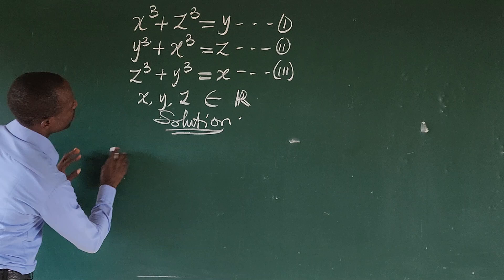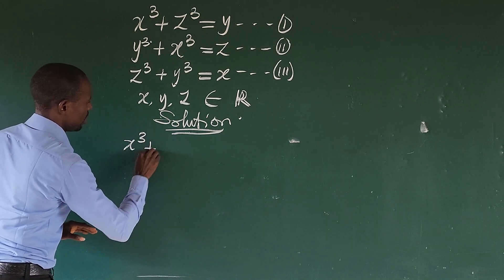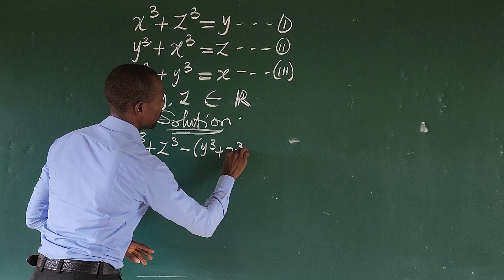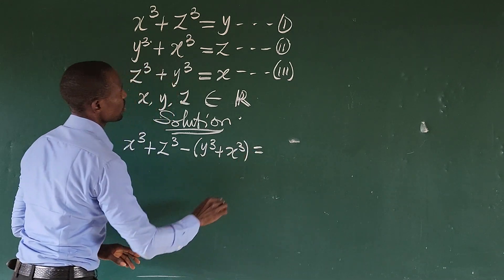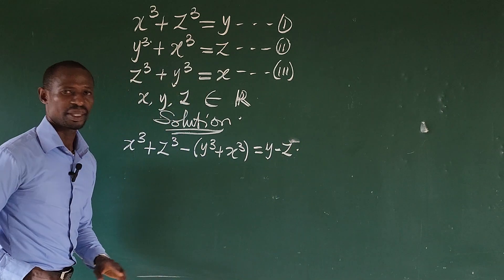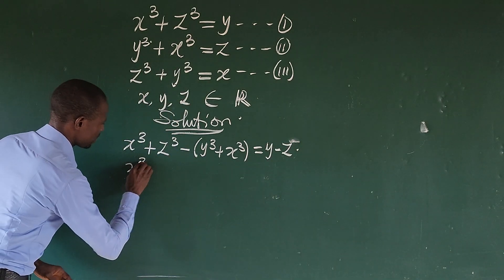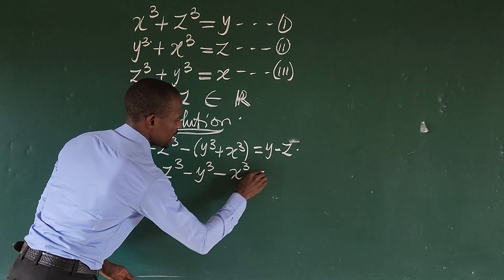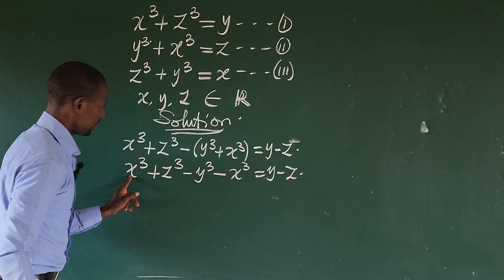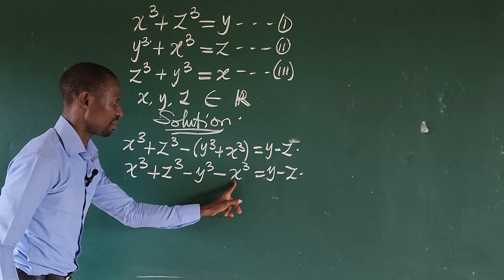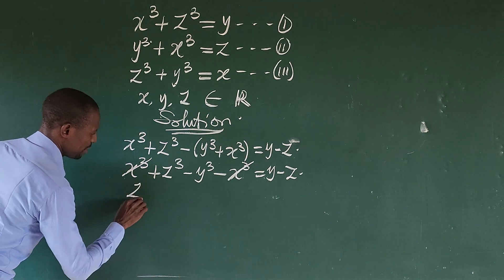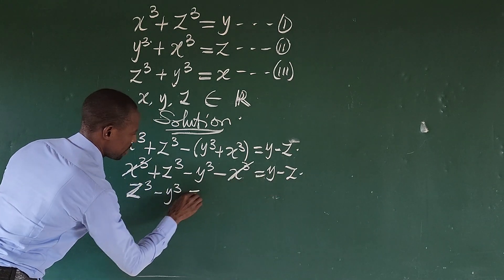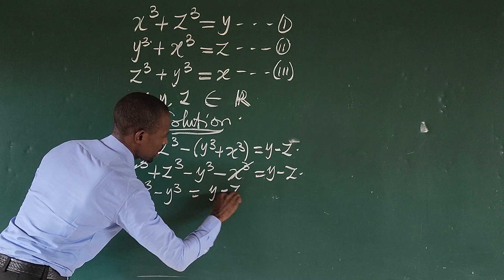Subtracting equation two from equation one: equation one is x³ + z³, minus equation two which is y³ + x³, equals y minus z. Opening up the brackets, we have x³ + z³ − y³ − x³ = y − z. The x³ terms cancel, leaving z³ − y³ = y − z.